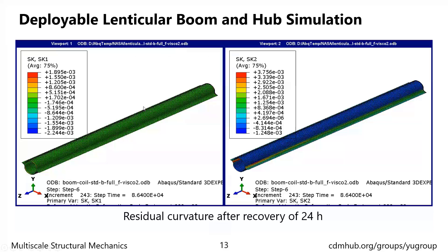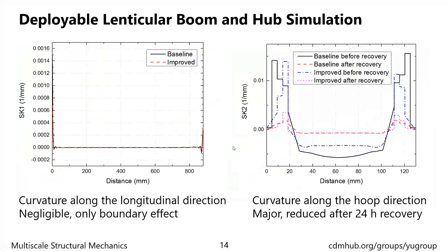Here on the left shows the contour of the residual curvature in the longitudinal direction, SK1, and on the right we have the curvature in the hoop direction, SK2. Both are the results after 24 hours of recovery. We can see that SK1 is trivial while some major values are observed for SK2. The plot of SK1 along the longitudinal direction shows only some boundary effect at both ends. On the other side, SK2 plotted along the hoop direction at the mid-span of the boom shows major values in both segment 1 and segment 2. The opposite sign is because of the initial geometry of the cross-section. After 24 hours of recovery, the residual curvature is greatly reduced.